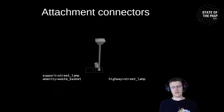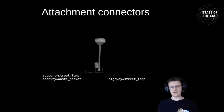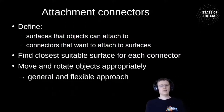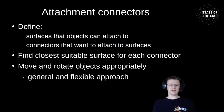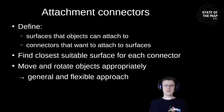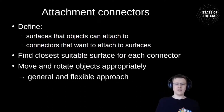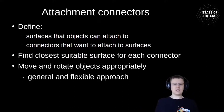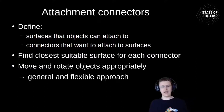I also had to modify the waste basket model by omitting the post that would otherwise connect it to the ground. The steps are: define surfaces objects can attach to; define connector points wanting to attach to those surfaces; find the closest suitable surface for each connector; then move and rotate objects so the connector and surface are in direct contact.